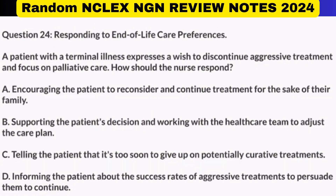A. Encouraging the patient to reconsider and continue treatment for the sake of their family. B. Supporting the patient's decision and working with the healthcare team to adjust the care plan. C. Telling the patient that it's too soon to give up on potentially curative treatments. D. Informing the patient about the success rates of aggressive treatments to persuade them to continue.